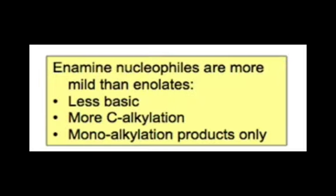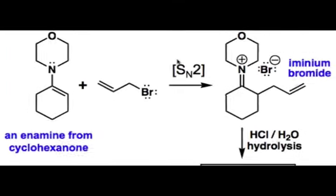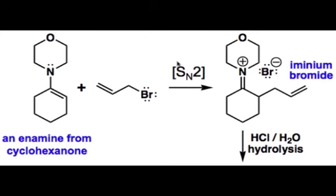Although enamines are derived from carbonyl groups, chemists go to the trouble of making them because they offer substantial advantages over using enolates or enols for alkylation reactions. The first advantage is that they are not prone to over-alkylation.